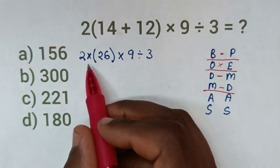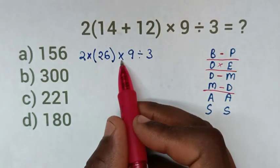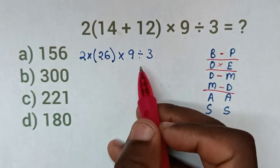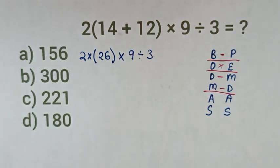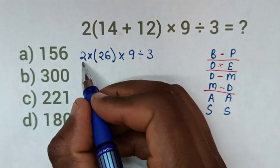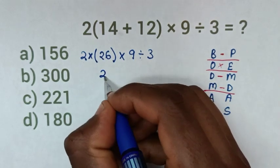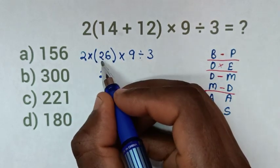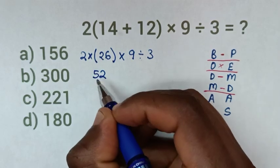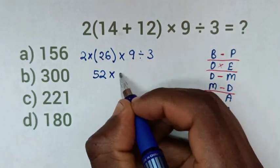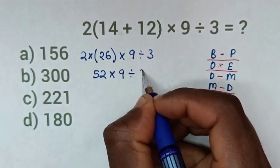From our problem, we have multiplication, then division. So, we start with 2 × 26. 2 × 6 is 12, carry 1. 2 × 2 is 4 plus 1 is 5. Then, 52 × 9 ÷ 3.